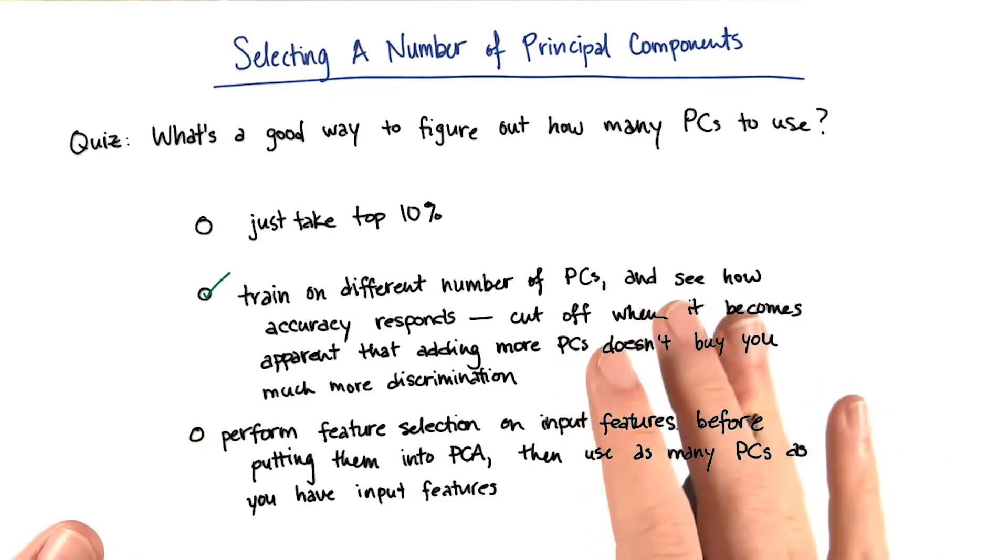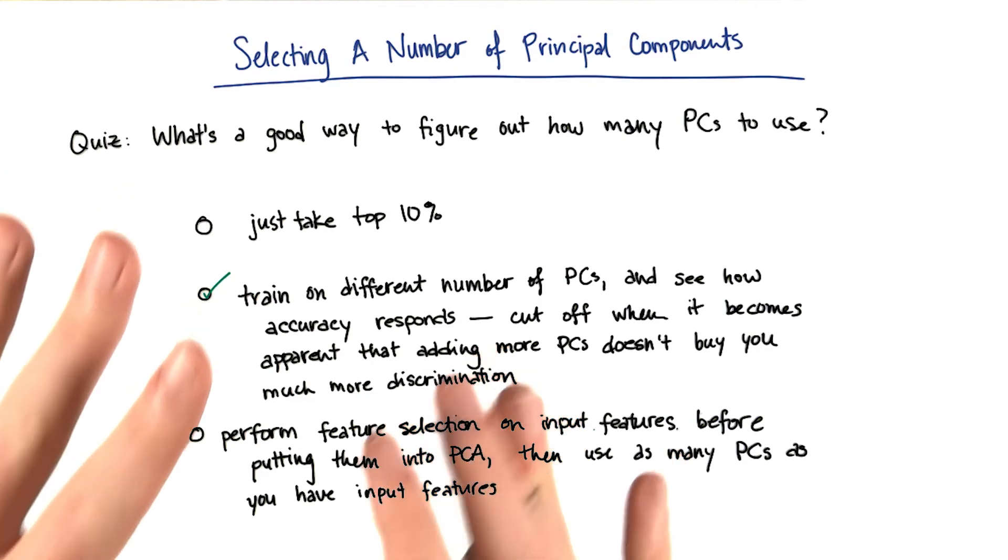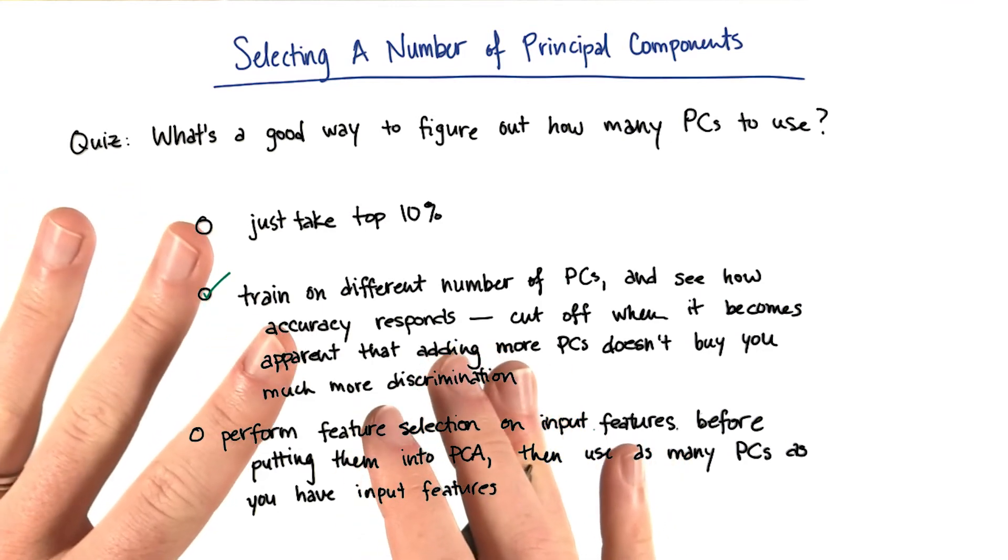It's fine to do feature selection on the principal components after you've made them, but you want to be very careful about throwing out information before you perform PCA.